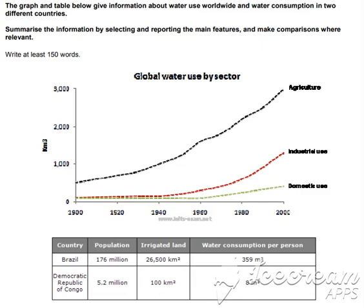The graph and table below give information about water use worldwide and water consumption in two different countries. The graph shows how the amount of water used worldwide changed between 1900 and 2000.